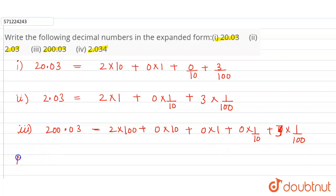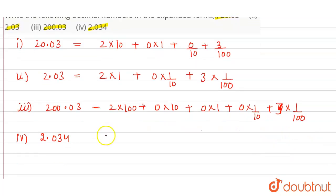Now, fourth part is 2.034. So, this is equal to 2 × 1 plus 0 × 1/10 plus 3 × 1/100 plus 4 × 1/1000. This is the correct and required answer for the given question.